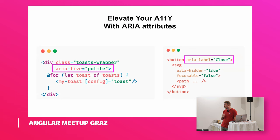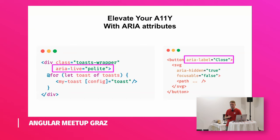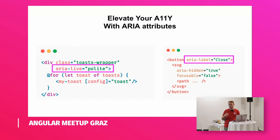ARIA live, for example, is an attribute you can use to indicate to screen readers that whatever is inside that block is likely to change over time or because of user interaction. Whenever the user is idle, the screen reader will decide it has time to announce this to the user and speak out loud whatever text is inside the block. In this case it's a list of toasts — those are typically used to signal that an error happened on the backend or when validating a form.